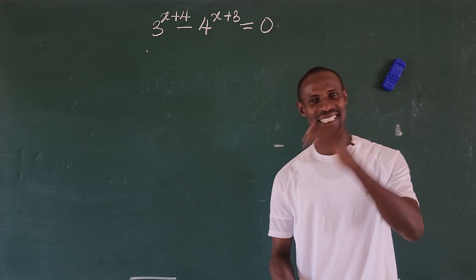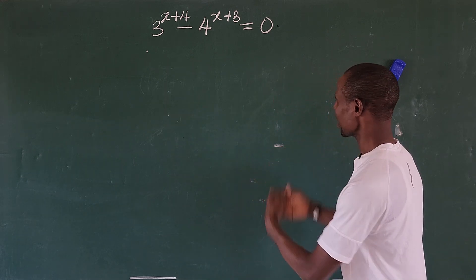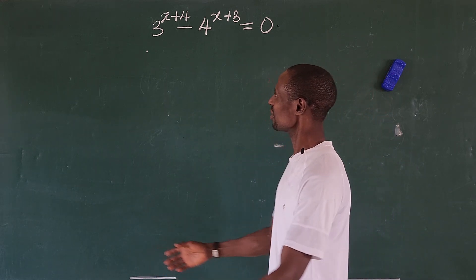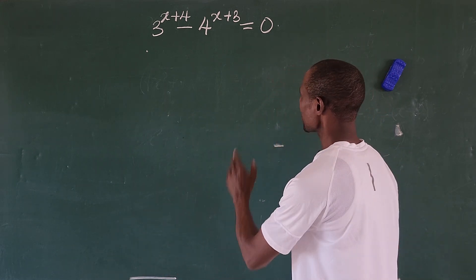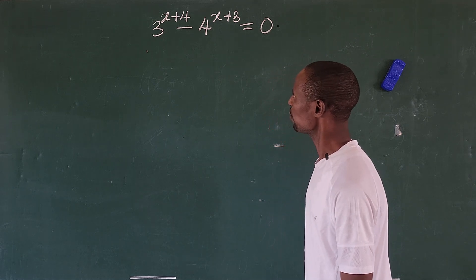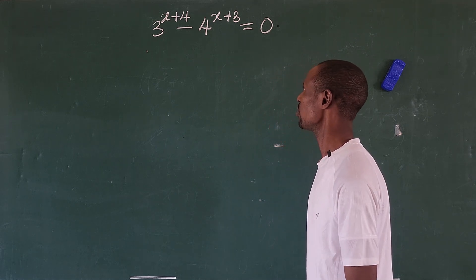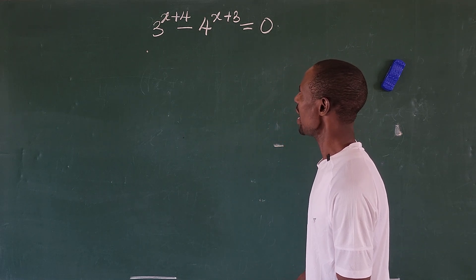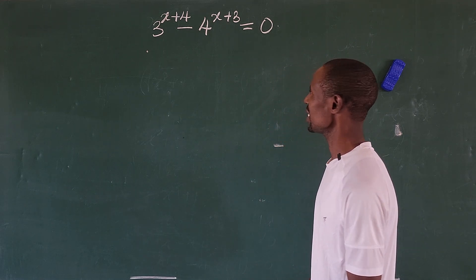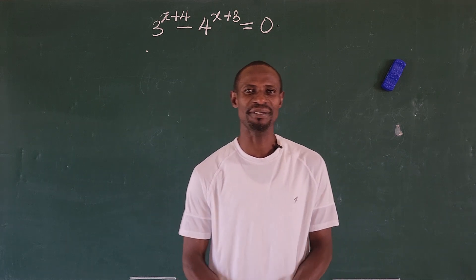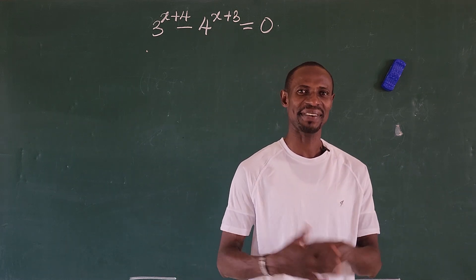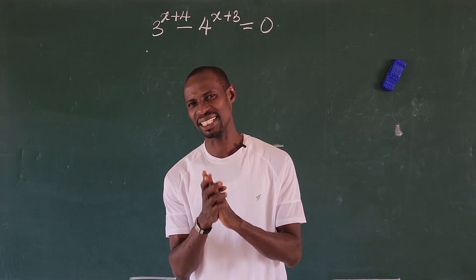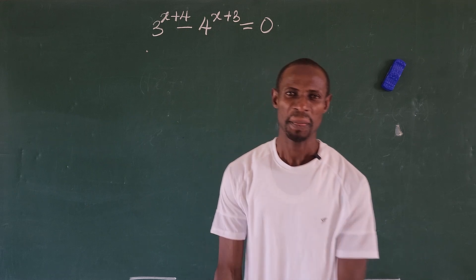Okay, but despite that, we have a math problem on the board. The question is: 3 to the power of x plus 4, minus 4 to the power of x plus 3, equal to 0. What is the value of x that satisfies this math challenge?